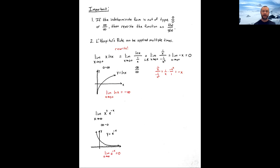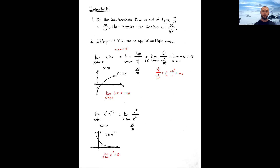We rewrite using the relationship between negative exponents and fractions: e^(−x) = 1/e^x. So the expression becomes x²/e^x, which gives an indeterminate form ∞/∞. Now we can apply L'Hôpital's Rule.